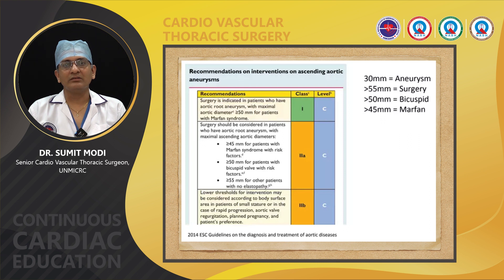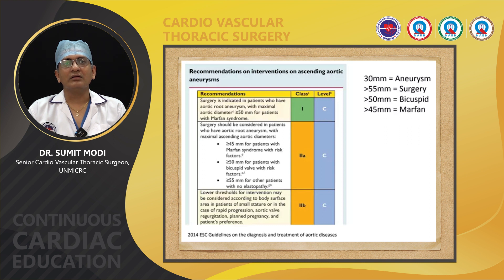In summary: normal patient threshold is 55 mm, bicuspid aortic valve is 50 mm, and in Marfan syndrome 50 mm is the cut-off point for surgical intervention. Any patient with diameter more than these thresholds requires surgical intervention. If the patient has a short stature or small body size, or is having rapid growth, rapid progression of disease, aortic regurgitation, or planned pregnancy, then the indication is lower — that is a Class IIB indication.